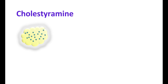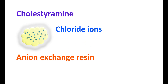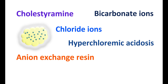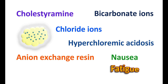Another effect of cholestyramine is on chloride ions. This compound acts as an anion exchange resin; since it is positively charged, it can form salts with chloride ions. These chloride ions are freely available for exchange with other negative ions such as bicarbonate anions. Therefore, chloride ions are more absorbed into systemic circulation, resulting in hyperchloremic acidosis, which may cause nausea and fatigue.